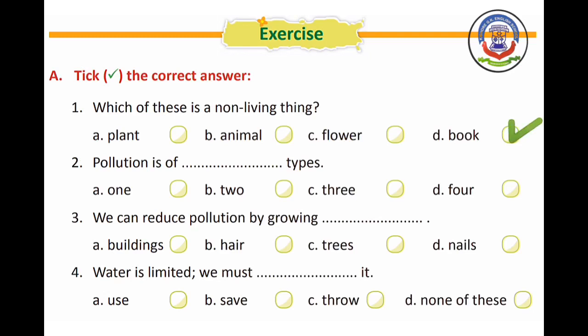Number 2 — pollution is of how many types? Options: A) 1, B) 2, C) 3, D) 4. The right answer is option D, 4. As we read in the chapter, there are four types of pollution: air pollution, land pollution, water pollution, and noise pollution.